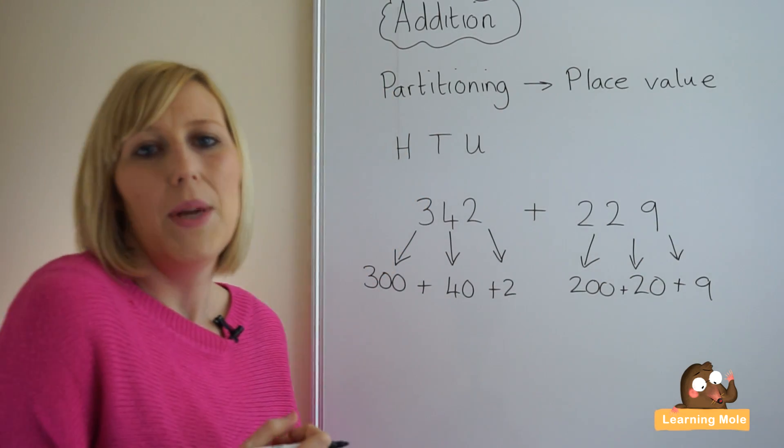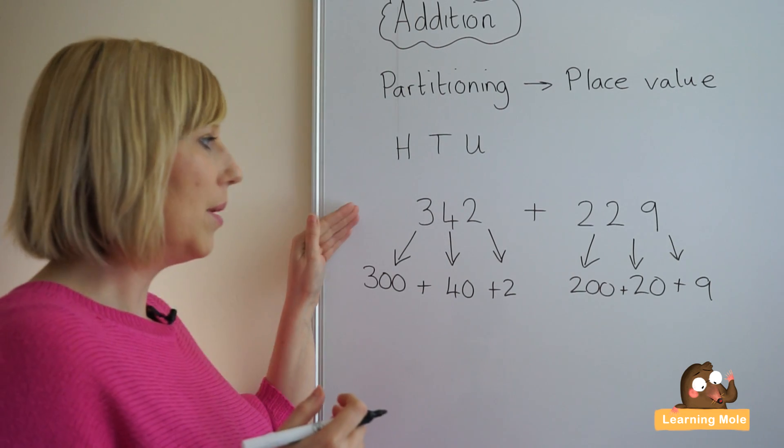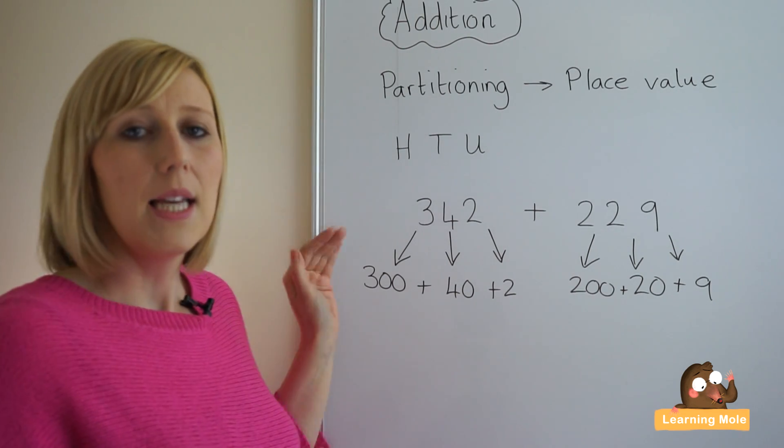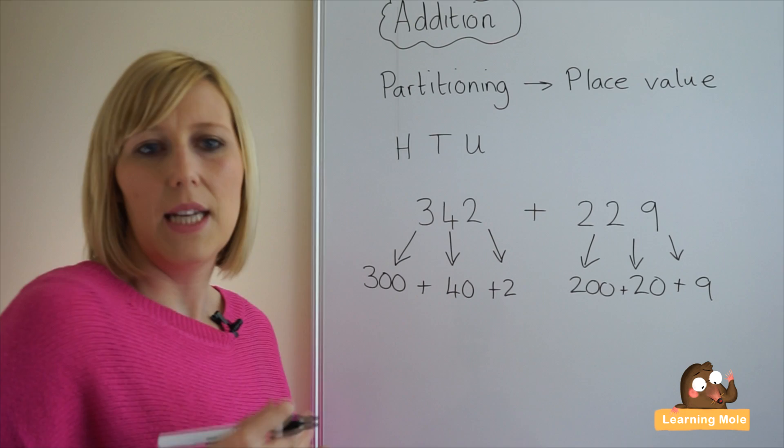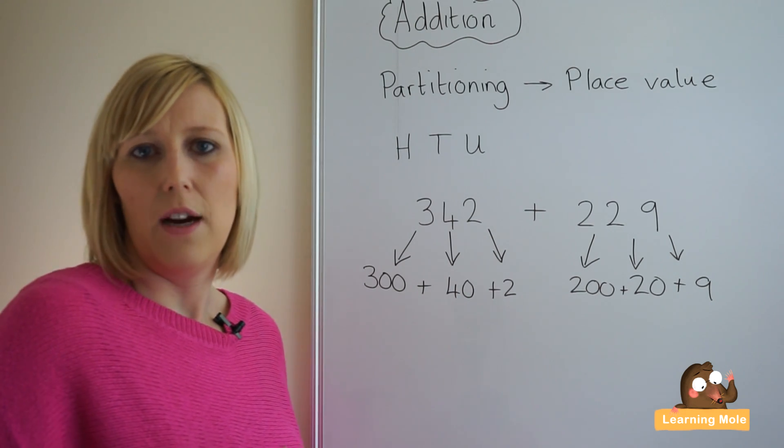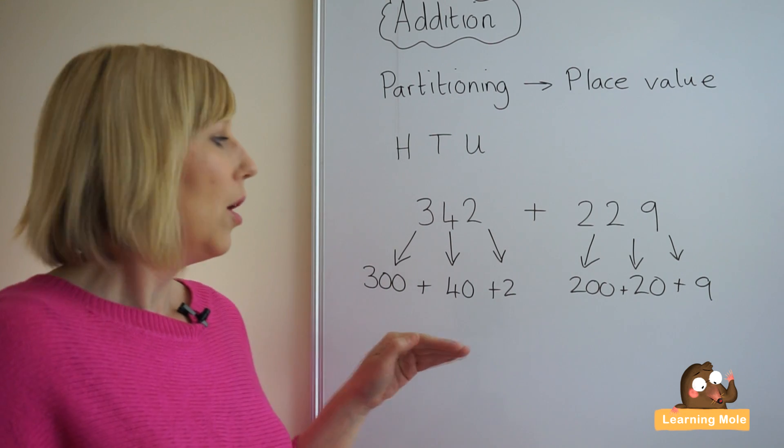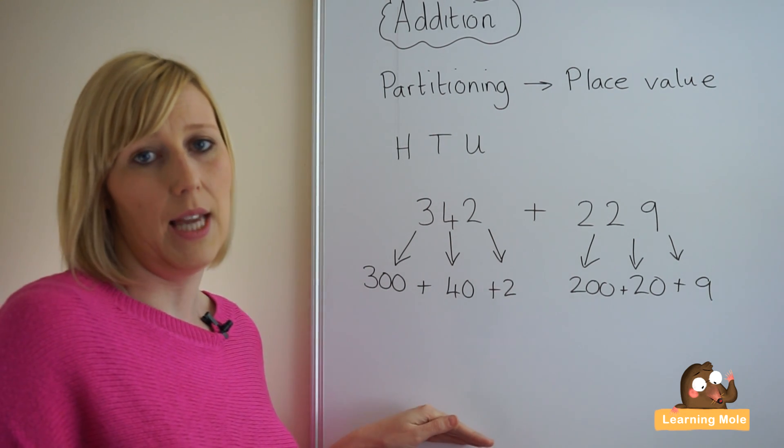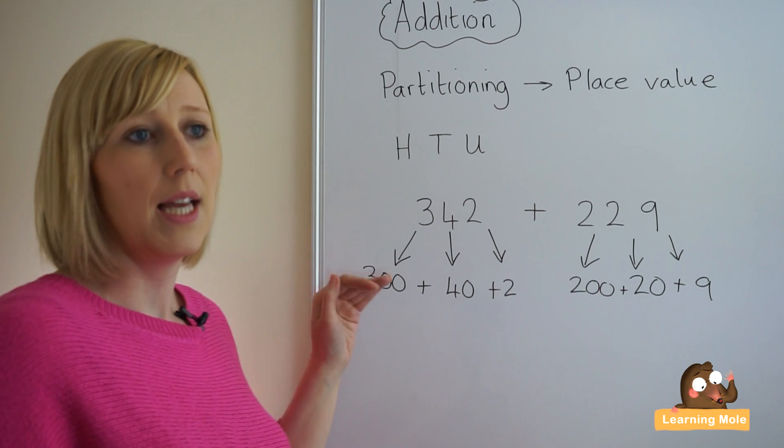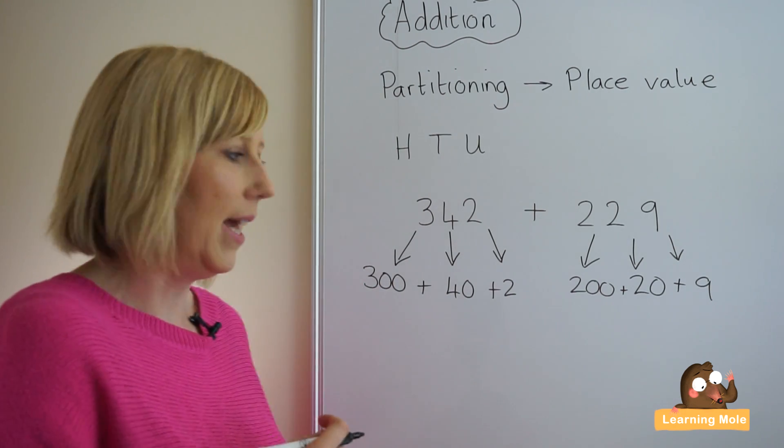This is now where we start to recombine. So step number one, partitioning. Step number two is sorting out those numbers into their like for like. So putting our hundreds together, putting our tens together and putting our units together. So step one, partitioning. Step two is matching like for like.